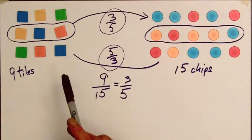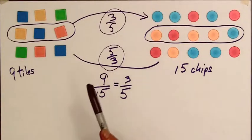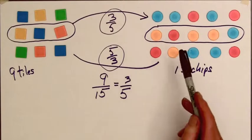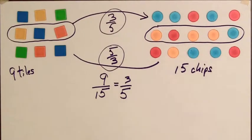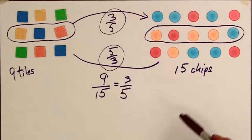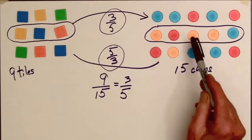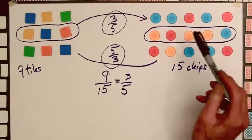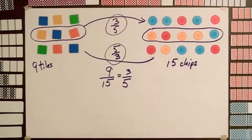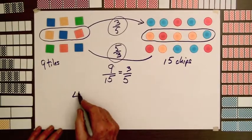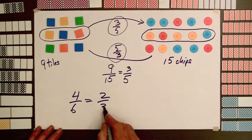We have used a ratio here to compare two different sets, but it is also possible to compare the different numbers of objects within a given set. For example, the ratio of the number of orange chips (4) to the number of blue chips (6) is 4 to 6, or in lowest terms 2 to 3.